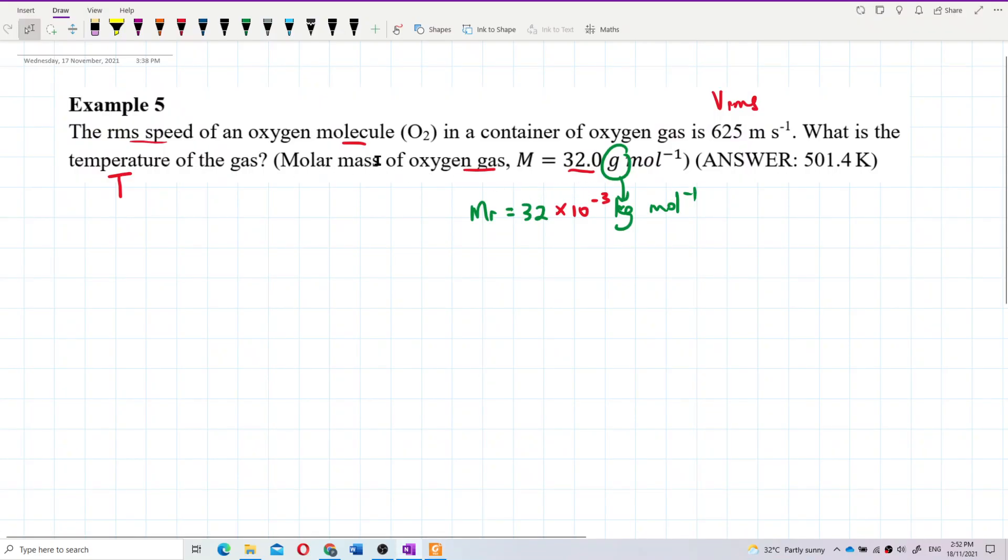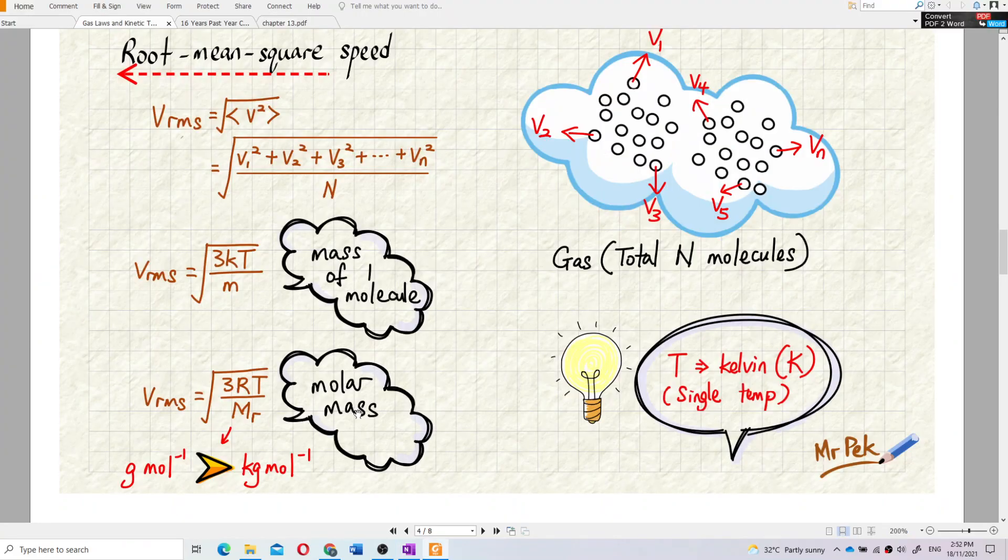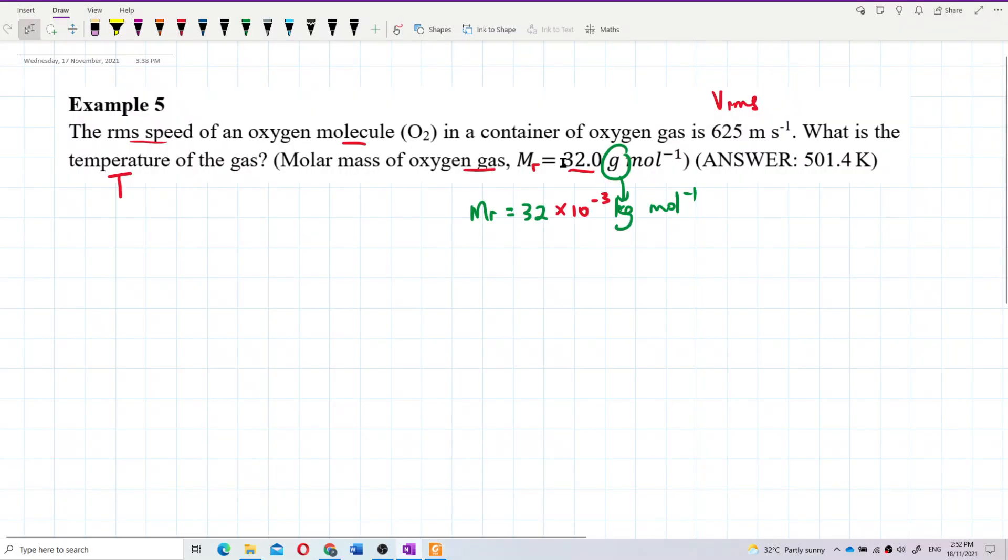Since we are given the molar mass, we use this formula. This is the M_r, the molar mass. v_rms is square root 3RT over molar mass. Remember the molar mass needs to be in kilogram per mole, not gram per mole.